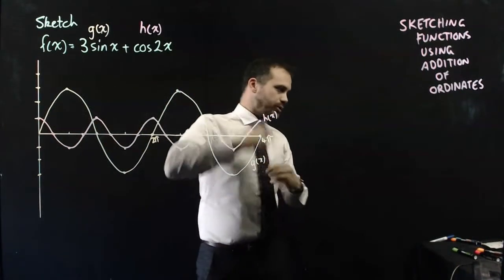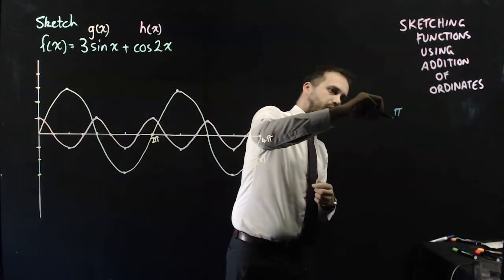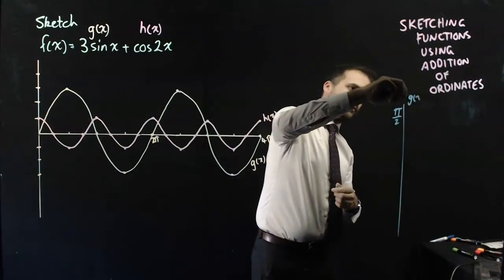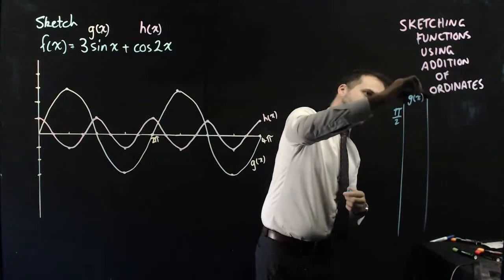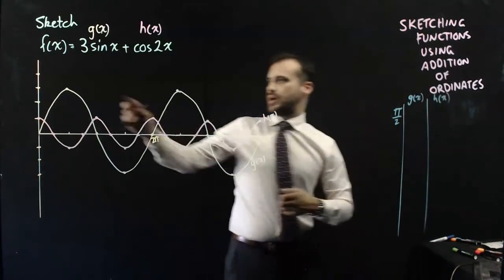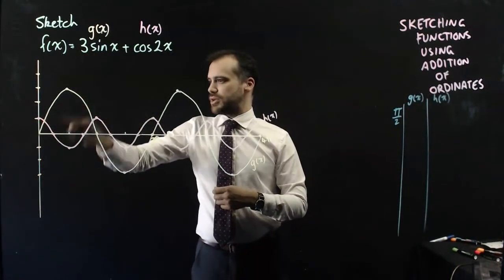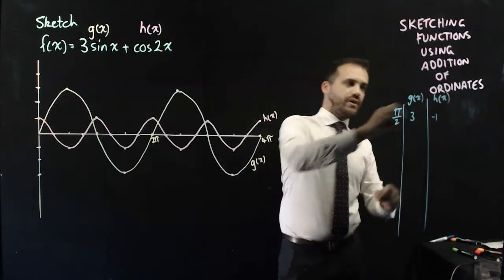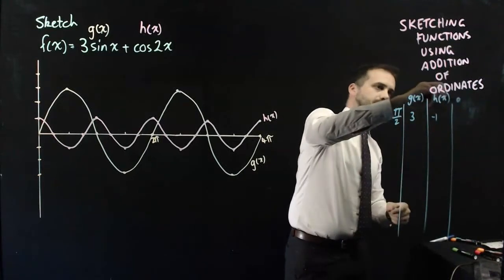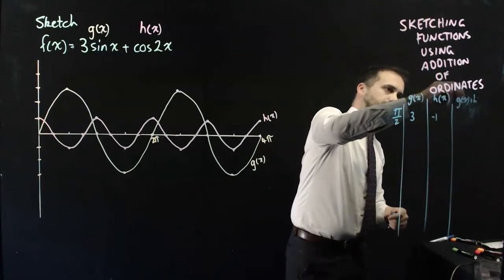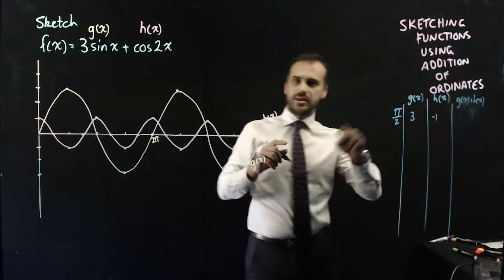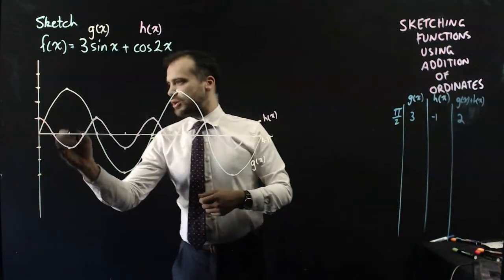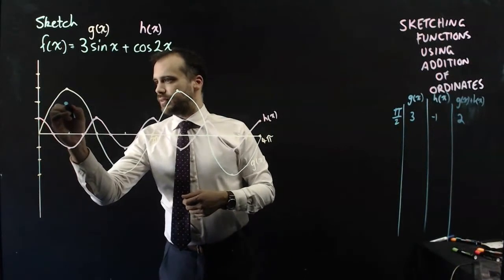So at that point, I'll just write it here, at π/2, g(x) and h(x), respectively, 3 and -1. Which means that g(x) + h(x) is going to be 3 + (-1), which is 2. And I can put a dot right about there.